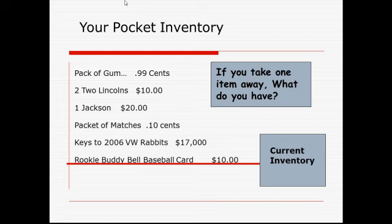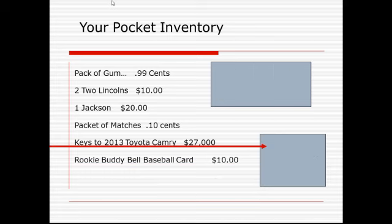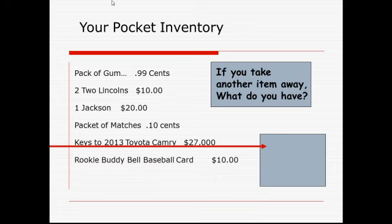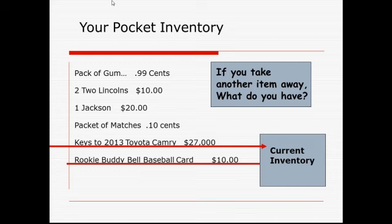Any time you take an inventory and any adjustment is made, you have a current inventory. An inventory is a snapshot in time — during the course of time things can be taken away, and then that becomes your current inventory. A bank may ask you what your current inventory is, and depending on when you do your inventory, you may take it right away to find out.